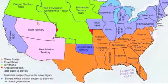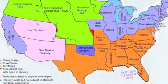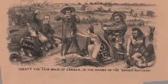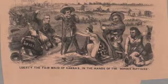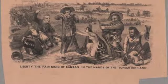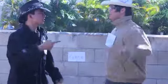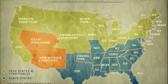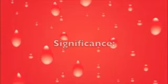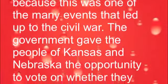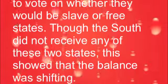The Kansas-Nebraska Act was passed in 1854. This act stated that people living in the Kansas and Nebraska territories could decide if they wanted to have slavery within their borders or not. This prompted the movement of many people into these areas. This upset many northerners because Kansas and Nebraska were both above the Missouri Compromise Line. Southerners loved this idea because it gave them an opportunity to gain more slave land. Kansas came into the Union as a free state in 1861, and Nebraska came in as a free state in 1867. The government gave the people of Kansas and Nebraska the opportunity to vote on whether they would be slave or free states. Though the South did not receive either of these two states, this showed the imbalance that was shifting.